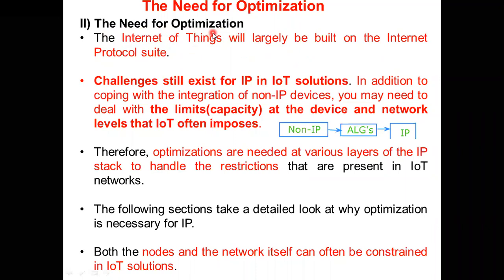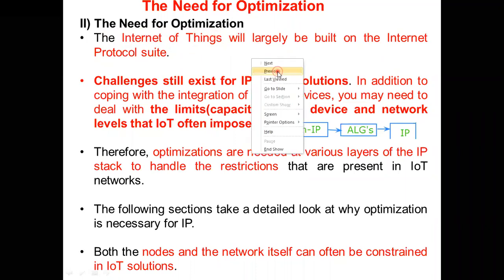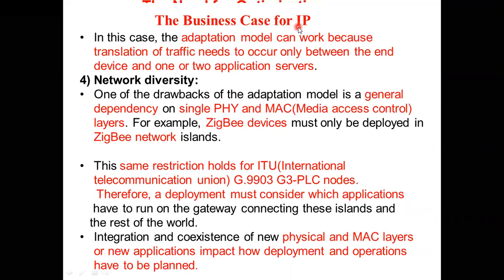Before going into the need for optimization, in the last video I explained the business case for IP. To recollect: the question raised is, 30 years back we developed IP, and with that IP we are communicating with different devices on the internet. Can we use the same IP for communication between two devices in the Internet of Things? It is impossible because IP is a very bulky protocol — we have to optimize and reduce it, and based upon our need, that amount of code we have to use. That is why two models are explained here.